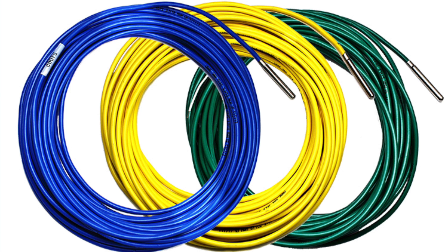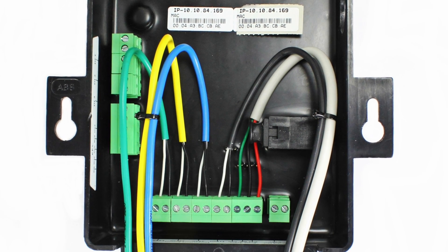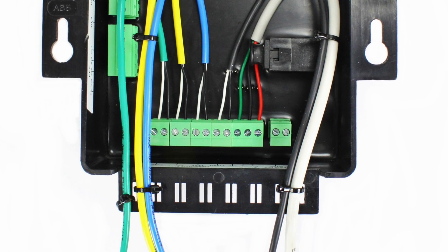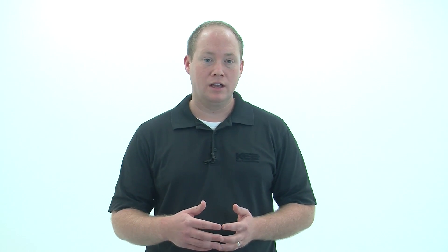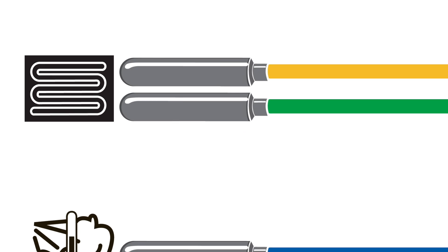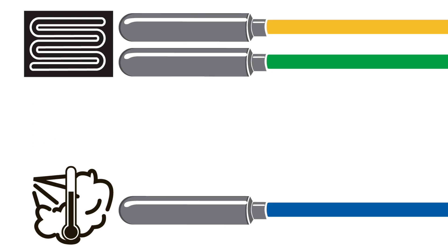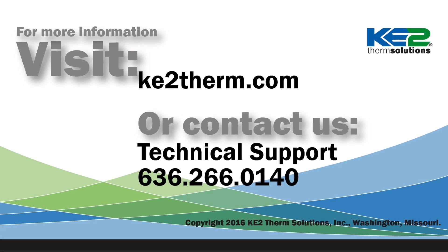One more thing to consider is that many of our kits are supplied with different color sensors. This will help keep wiring clear and help you standardize installs across locations. Although the sensors are the same, if you have a kit with color sensors, we recommend using yellow and green for the coil sensors and the blue for the air sensor.